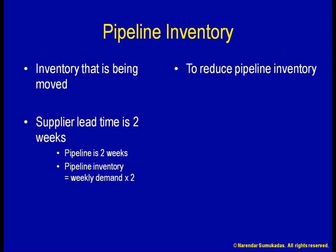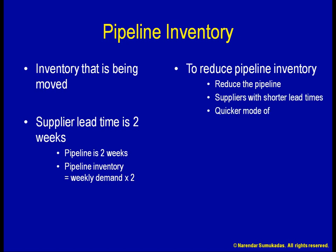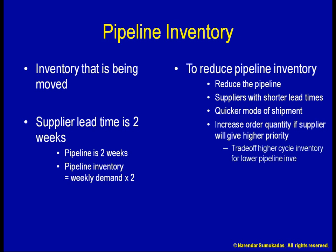To reduce my pipeline inventory, the primary mechanism is to reduce the length of the pipeline. If I can find more responsive suppliers and shipment methods, my pipeline inventory will be reduced. Sometimes the supplier may be prepared to give me higher priority, better terms, or shorter lead times if I increase my ordering quantities. Larger ordering quantities, however, mean larger cycle inventory. In that case, I have to weigh the benefits of reducing pipeline inventory against the downside of increasing cycle inventory.